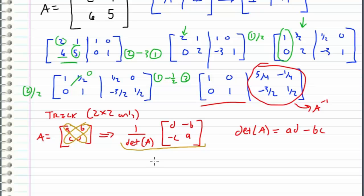And then we plug it into this equation right here and just switch the positions of A and D and negate B and C. So considering our original example where A is equal to 2, 1, 6, 5.